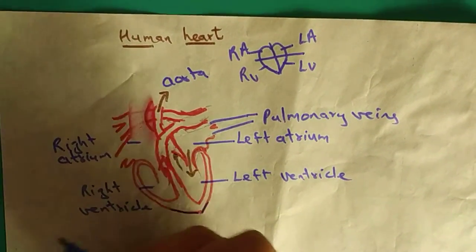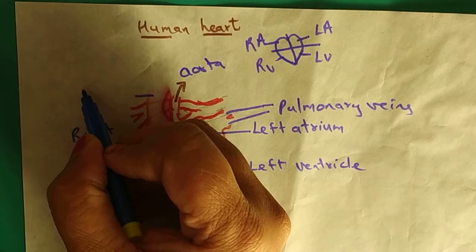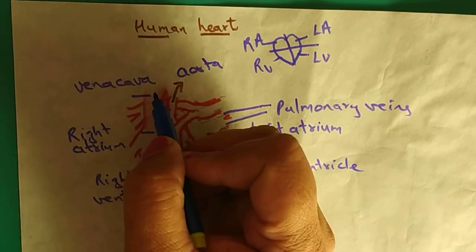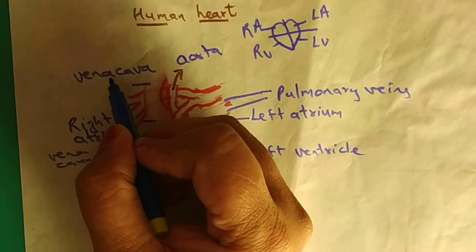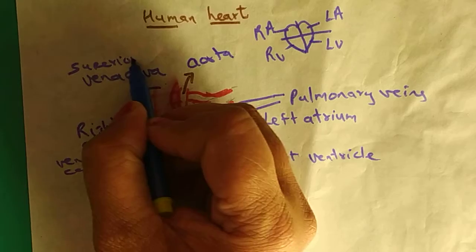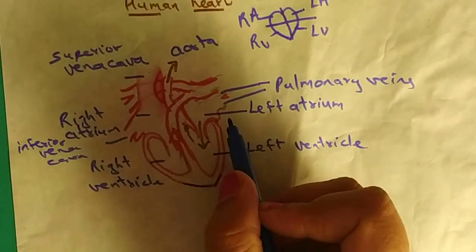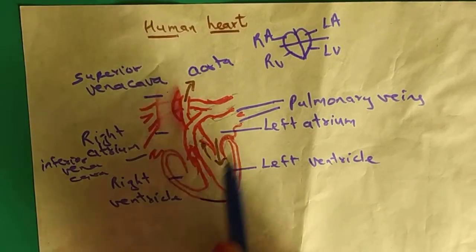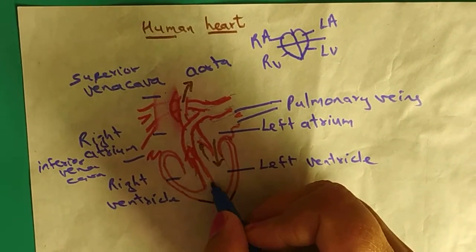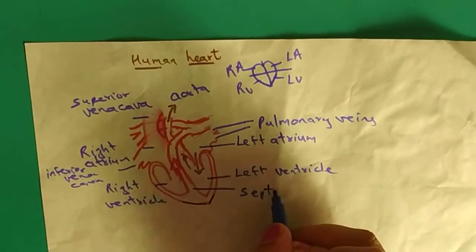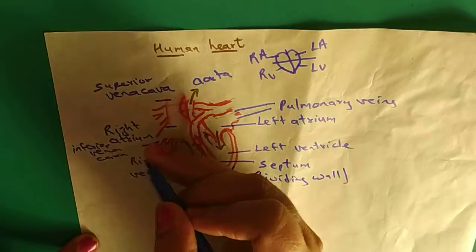Now let us see the right side. On the right side there is a pipe at the upper end called vena cava. From the lower side there is also a pipe called vena cava. The pipe at the upper side is called superior vena cava, as it brings blood from the upper parts. The lower one is the inferior vena cava. The right and left sides are separated by a wall called the septum, which is the dividing wall.